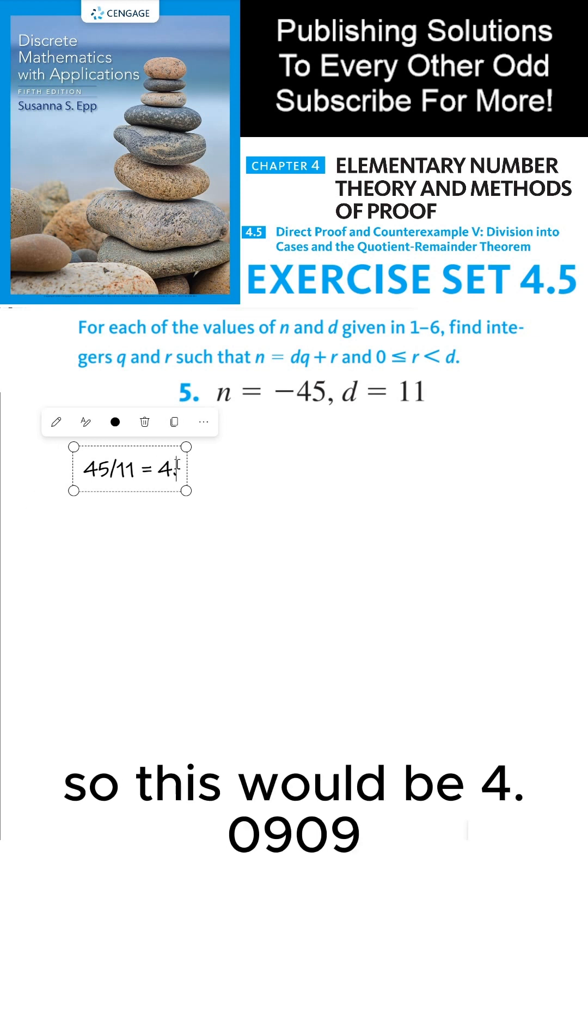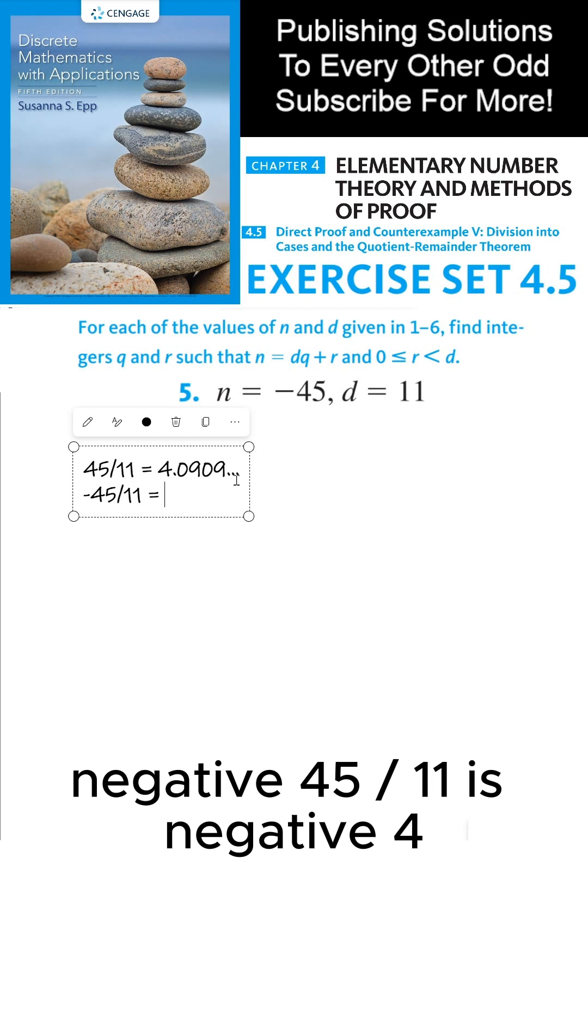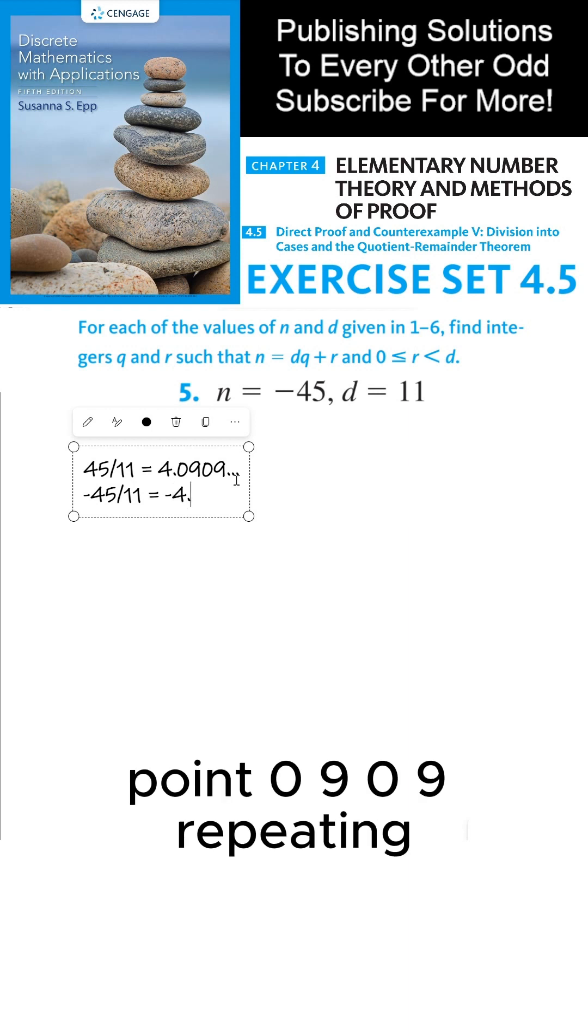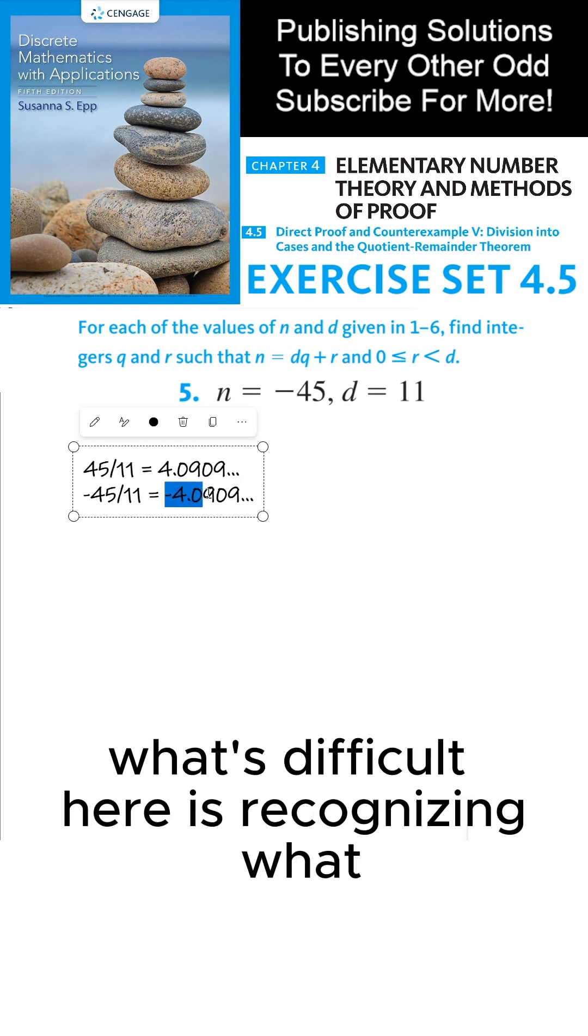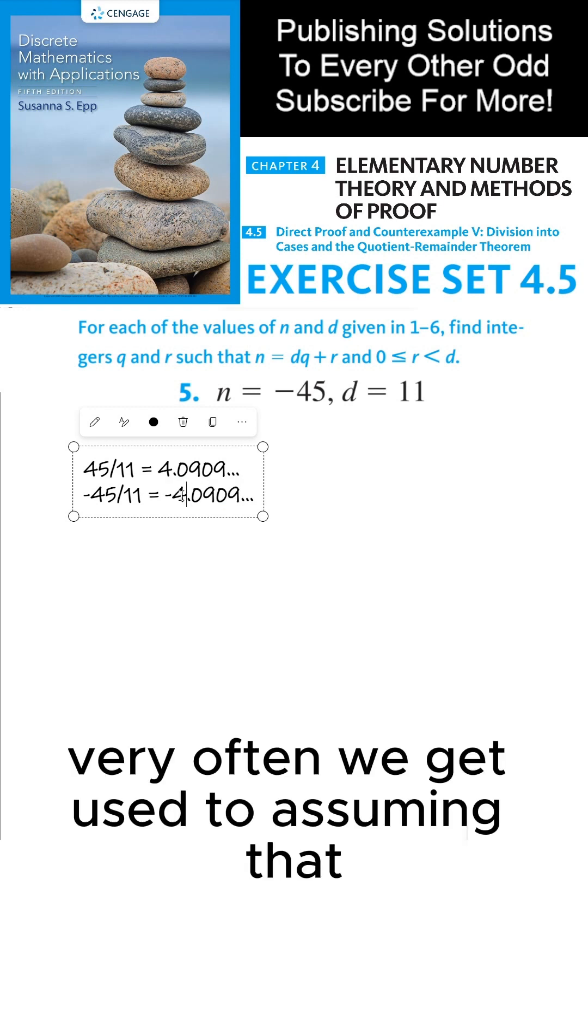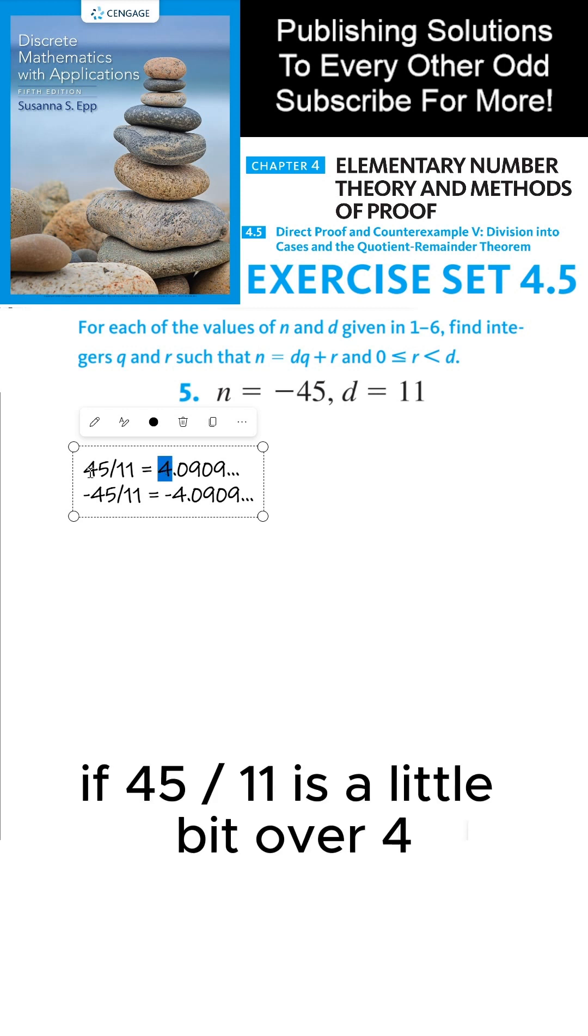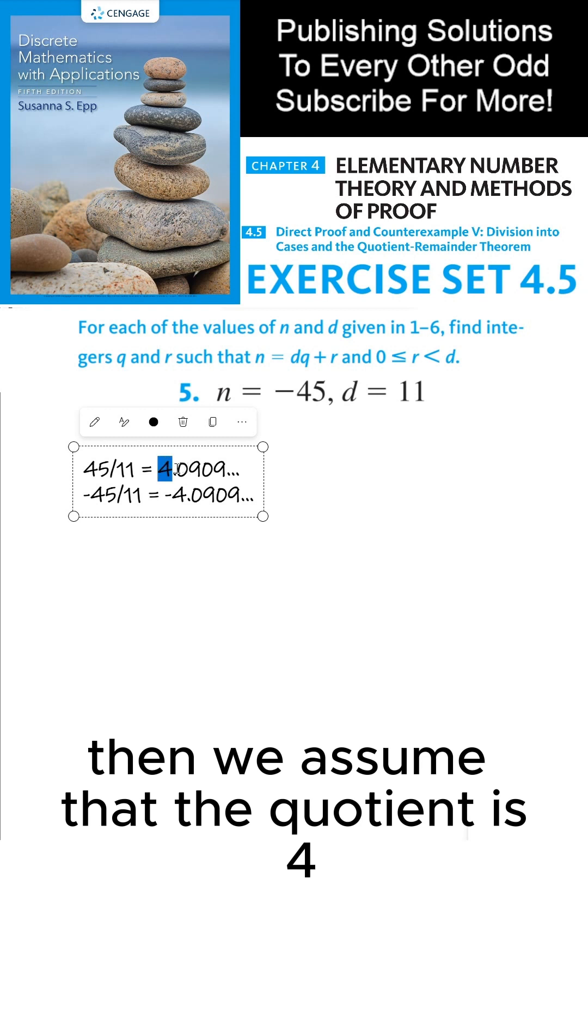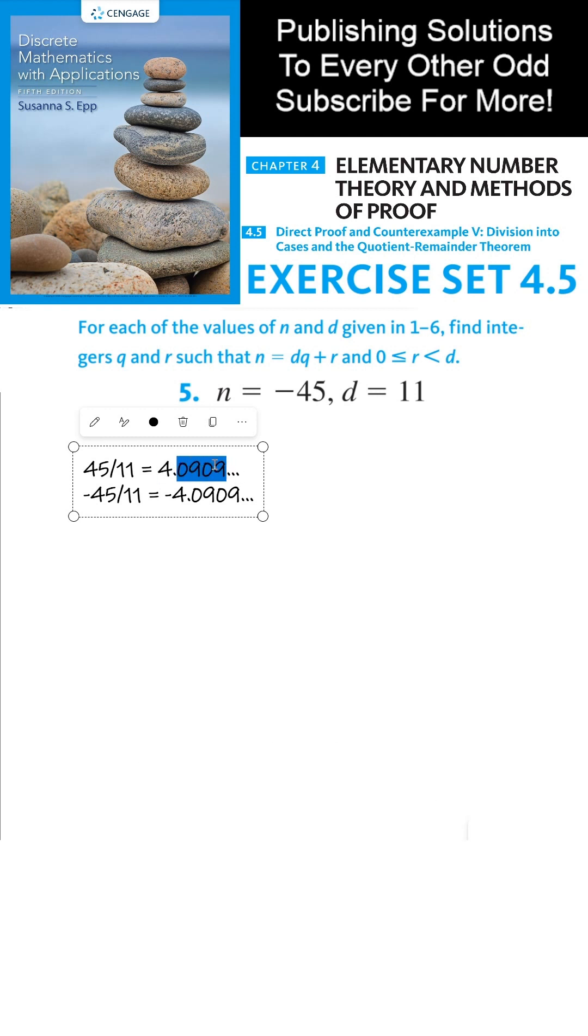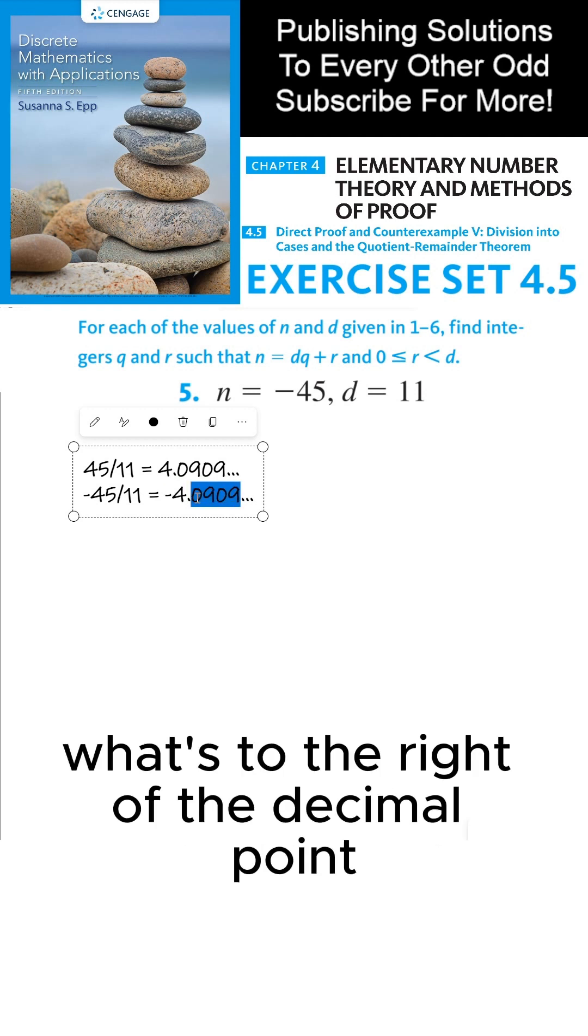What's difficult here is recognizing what my quotient and remainder is. Very often we get used to assuming that whatever this number is, that's our quotient. If 45 divided by 11 is a little bit over 4, then we assume that the quotient is 4 and the rest represents a remainder. The problem with this way of thinking is that for negative numbers, if I say that my quotient is negative 4, then this remainder would be negative, not positive.